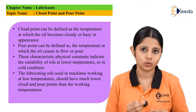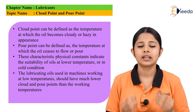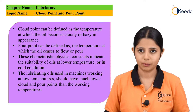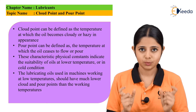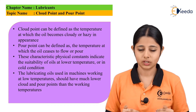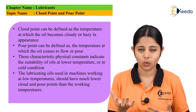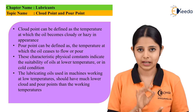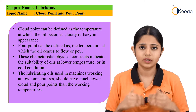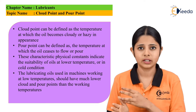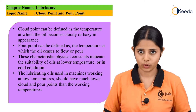That temperature is known as pour point. Pour point may happen at lower temperatures, and cloud point may also happen at lower temperatures. Both of these points occur at low temperatures, not at high temperatures. So if I take an oil and cool it, it will turn cloudy — that point is the cloud point. If I cool it even more, it will turn semi-solid or solid and cease to pour — that is the pour point.